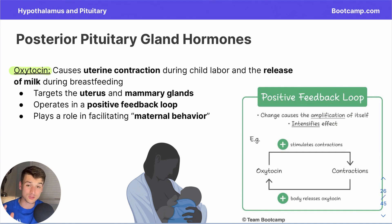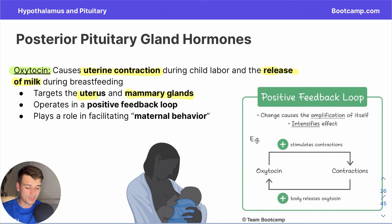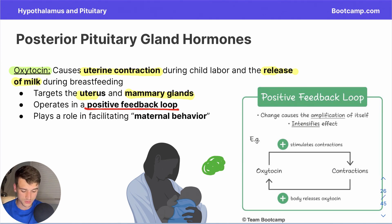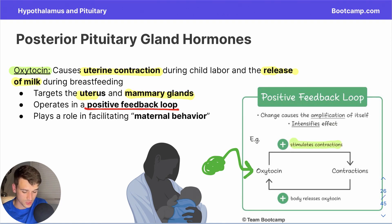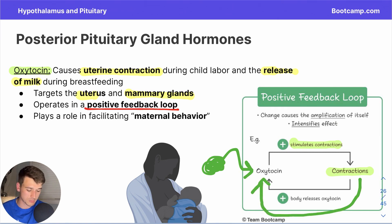Next we have oxytocin, which has two main functions. First, it targets the uterus to stimulate uterine contractions during child labor. Second, oxytocin targets the mammary glands to stimulate the release of milk during breastfeeding. What makes oxytocin so efficient is that it operates via a positive feedback loop in both cases. The hypothalamus produces oxytocin, passes it to the posterior pituitary, which releases it. The resulting contractions serve as the positive indicator for more oxytocin production — more oxytocin equals more contractions, which equals more oxytocin.